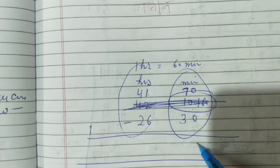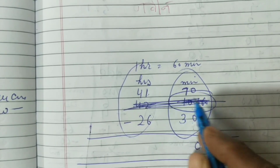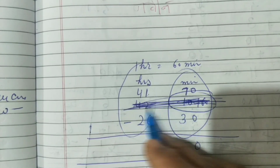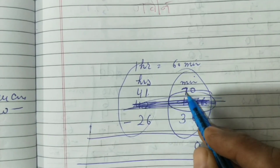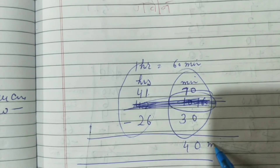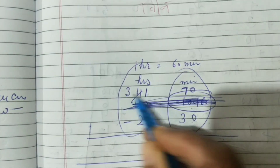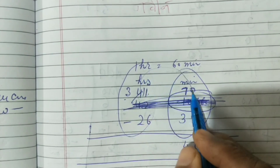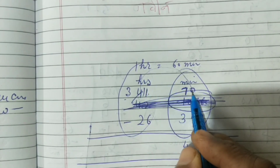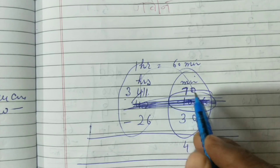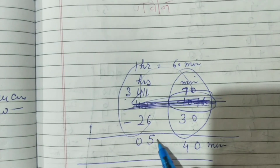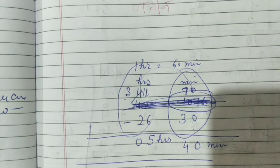Simple subtraction: 0 minus 0 is 0. 7 minus 3 is 4. So that gives 40 minutes. For the hours: borrow 1, leaving 3 and 1. Remember, when borrowing from hours into minutes, you add 60 minutes. So the answer is 5 hours 40 minutes.